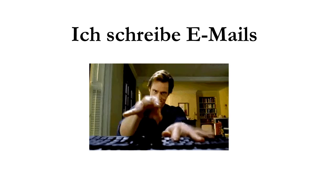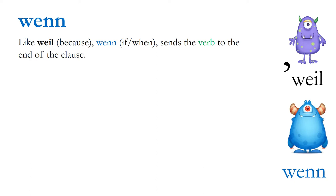We're now going to look at our grammar point for today: 'wenn,' meaning 'if' or 'when.' Like 'weil,' 'wenn' sends the verb to the end of the clause — you can think of it as the 'when monster.' For example: 'Ich spiele Tennis, wenn das Wetter gut ist.' We see how 'wenn' has kicked 'ist,' the verb, to the end of the clause. This means: I play tennis if or when the weather is good.